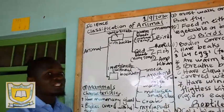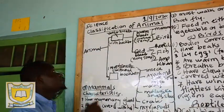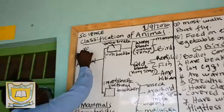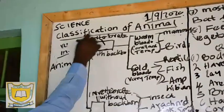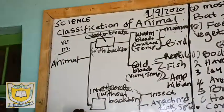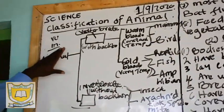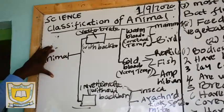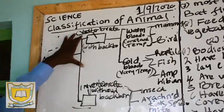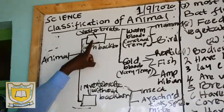Animals generally are classified as either vertebrates or invertebrates. We classify them into two groups: vertebrates or invertebrates.